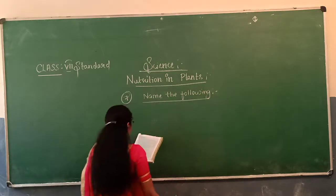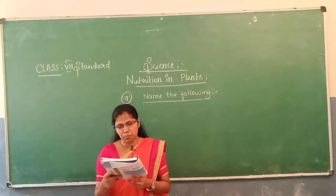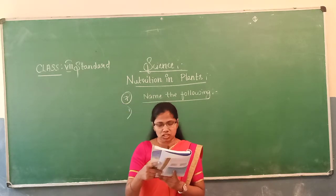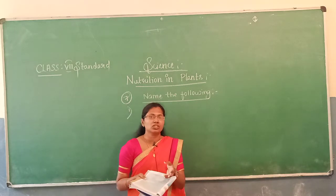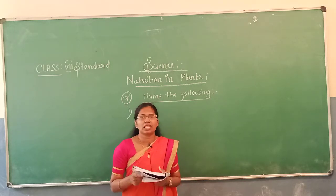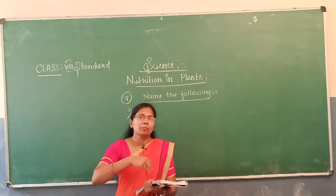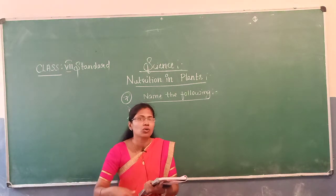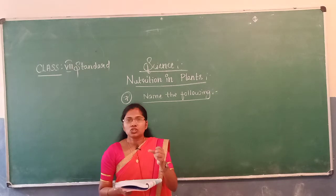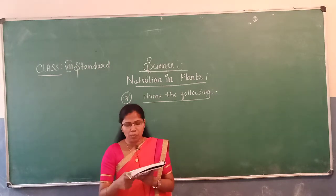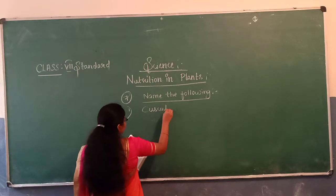The first question: a parasitic plant with yellow, slender and branched stem. There is a parasite plant called Cuscuta. It is yellow in colour and it obtains nutrients by attaching to other plants and absorbing their nutrients. So the answer is Cuscuta.